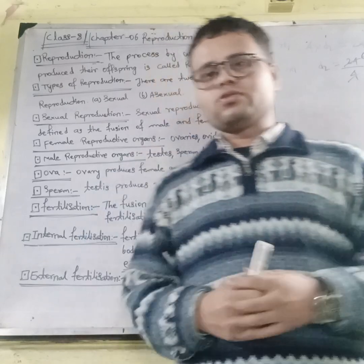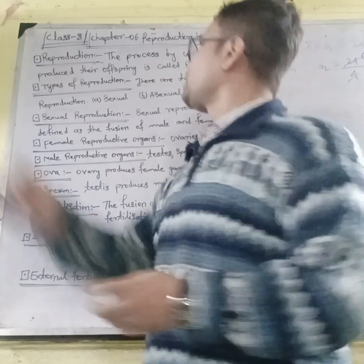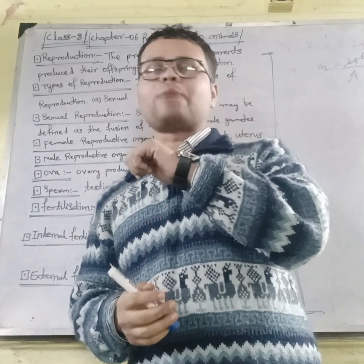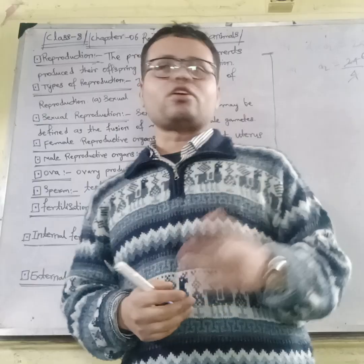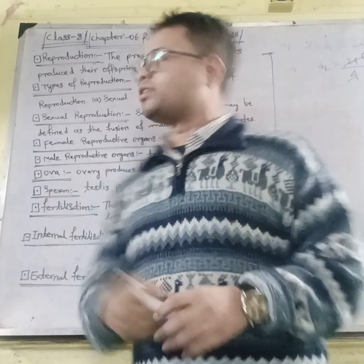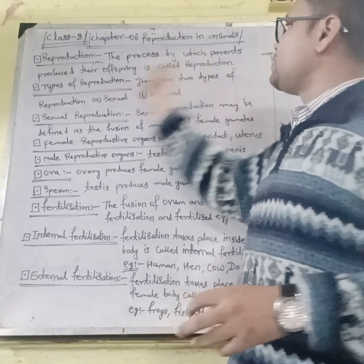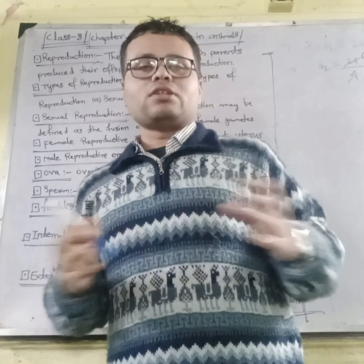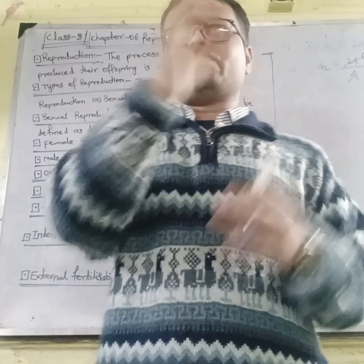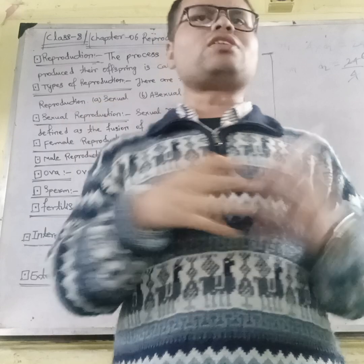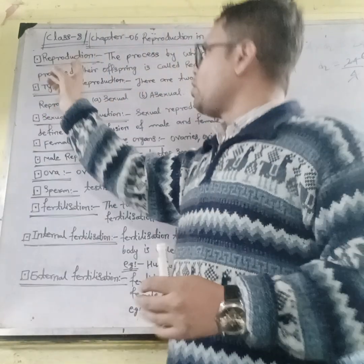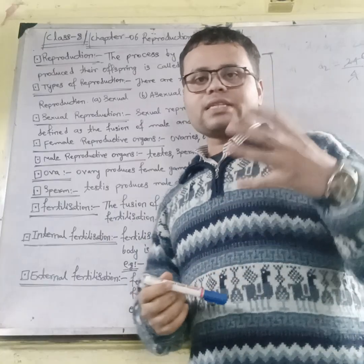Hello class, this is Roger. Today we are discussing Class 8, Chapter: Reproduction in Animals. The first concept is reproduction. Reproduction is the process by which parents produce their offspring. If parents produce offspring similar to themselves, that process is known as reproduction.